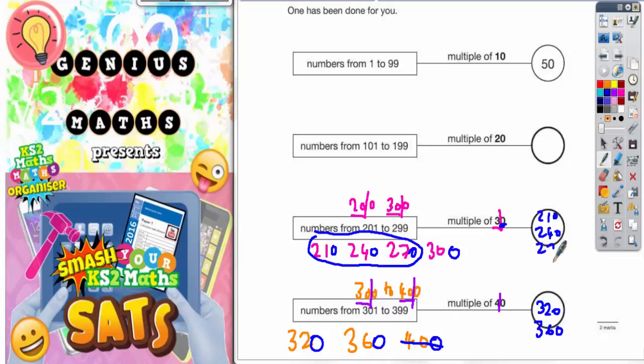You could do exactly the same method for multiples of 20 as well, although it might actually be easier just to write out the multiples of 20 because that's a little bit easier. You've only got to go up to 199. Either of those two methods will get you the same answer.